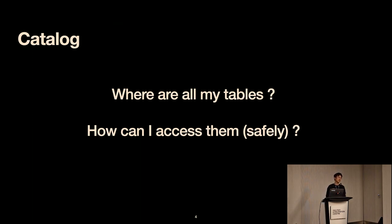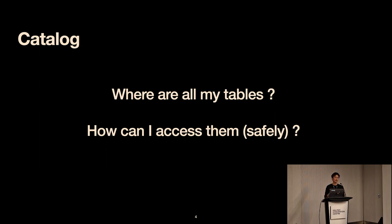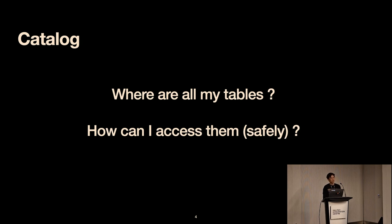What exactly is a catalog? Looking it up, catalog just helps answer two questions: where are all my tables, and how can I access them safely? 'Safely' relates to ACID guarantees — atomicity, consistency, isolation, and durability — which ensures no surprises when reading, writing, renaming columns, doing schema evolution, or partition evolution. Essentially, the catalog provides table discovery, transaction support, and managed concurrency.